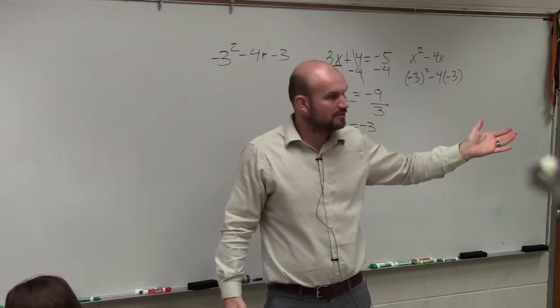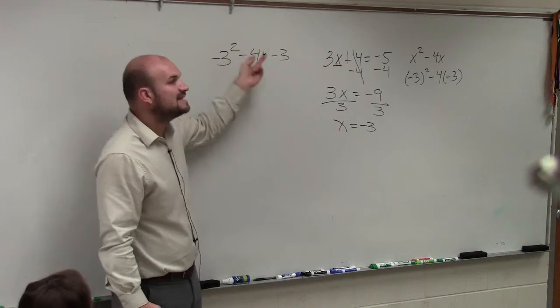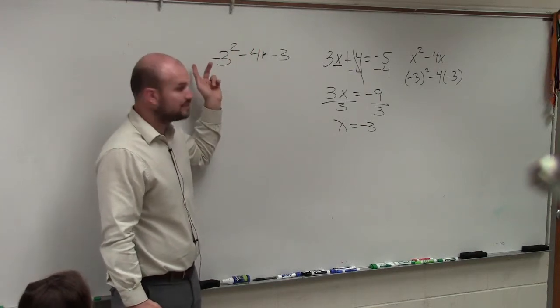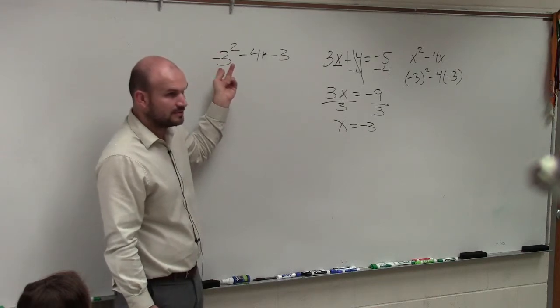So if you wrote it like this, that is technically 3 squared times negative 1, right? So if you type that in your calculator like that, you're going to get it wrong. It's going to give you negative 9, all right?